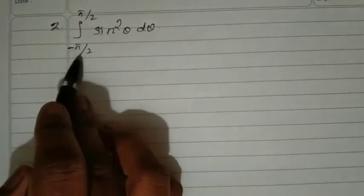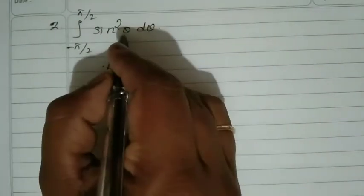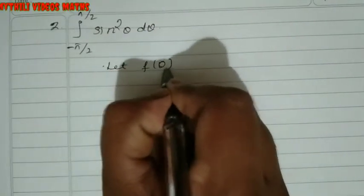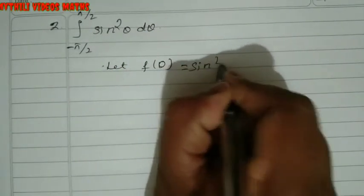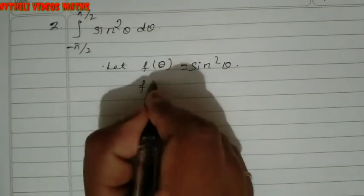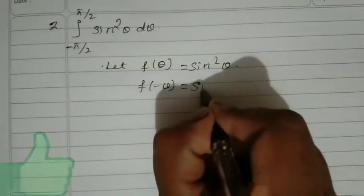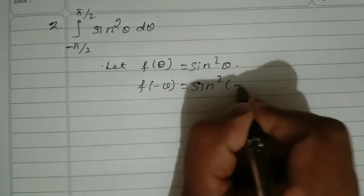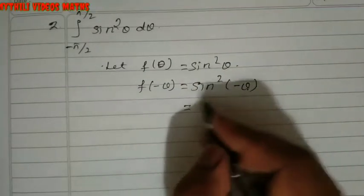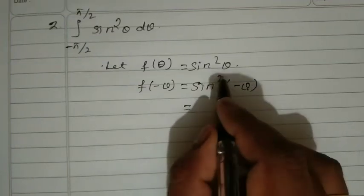Now the second sum: the integration from minus π/2 to plus π/2 of sin²θ dθ. Same approach — let f(θ) equal sin²θ. Then apply f(minus θ): f(minus θ) equals sin²(minus θ).